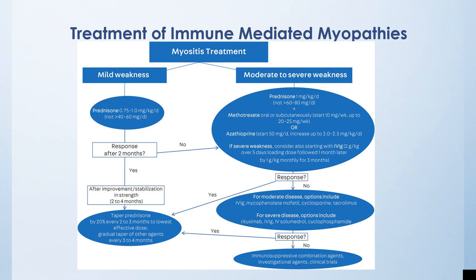Treatment of immune-mediated myopathies: for mild weakness, and for moderate to severe weakness, steroids remain the cornerstone — gradually starting and going up to 1 mg/kg/day — with long-term treatment using steroid-sparing agents such as azathioprine, mycophenolate mofetil (CellCept), or methotrexate. During acute to subacute worsening, IVIG may be needed. For patients where long-term immunomodulators don't work, rituximab or cyclophosphamide may be required.